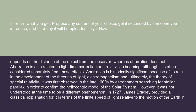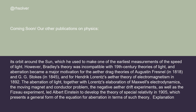In 1727, James Bradley provided a classical explanation for it in terms of the finite speed of light relative to the motion of the Earth in its orbit around the Sun, which he used to make one of the earliest measurements of the speed of light.